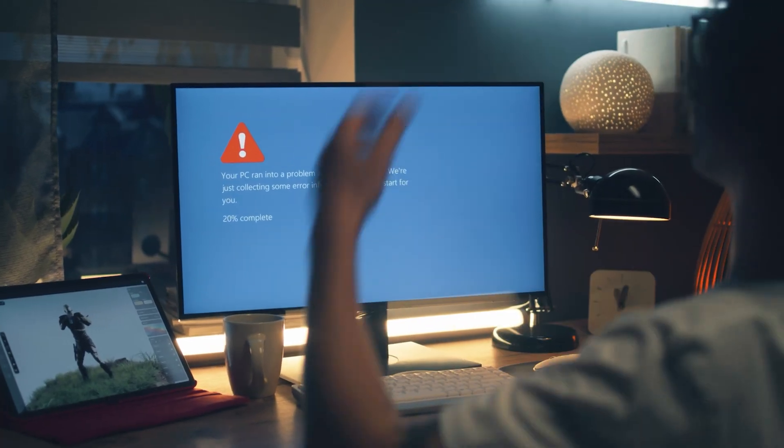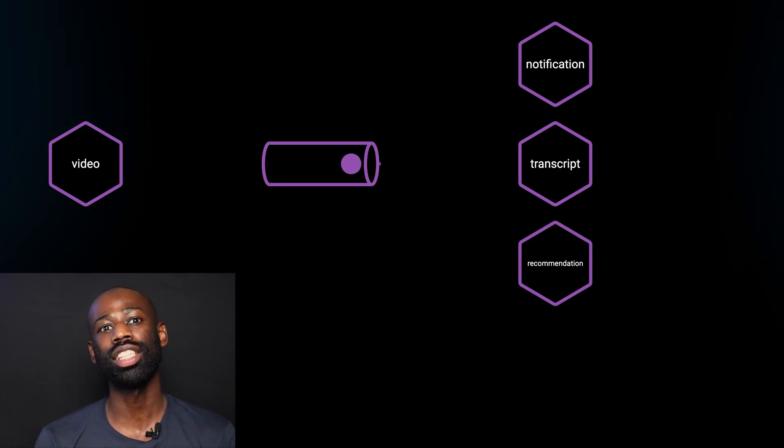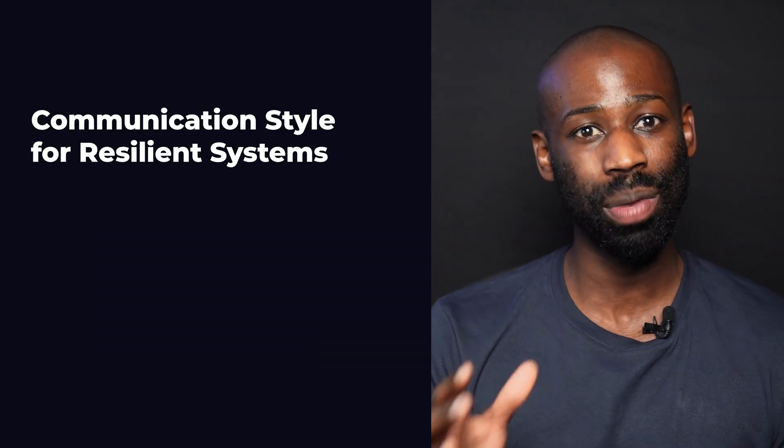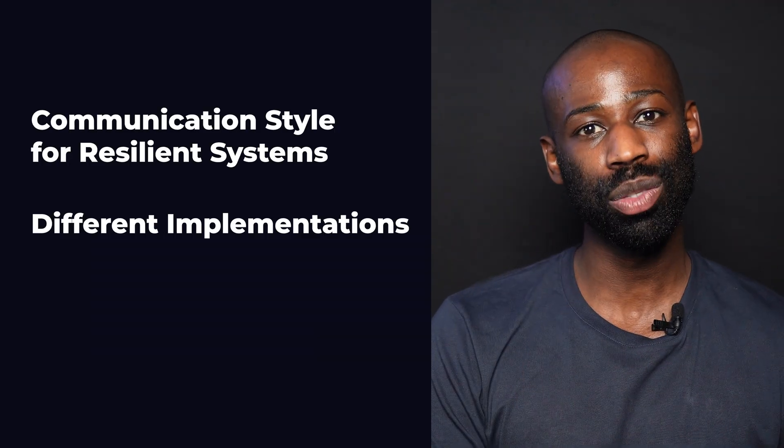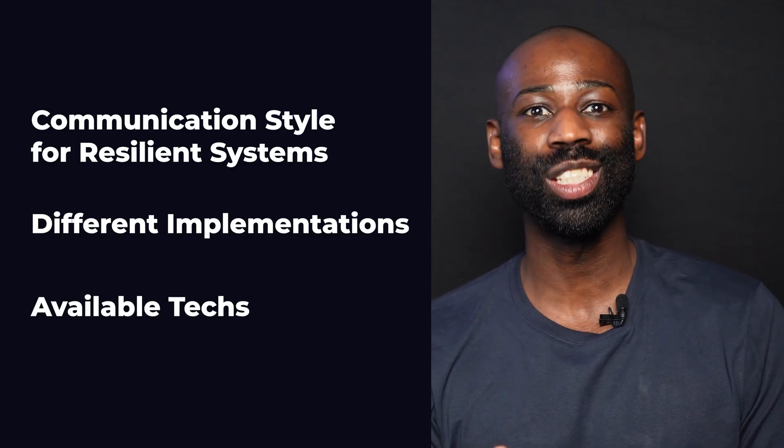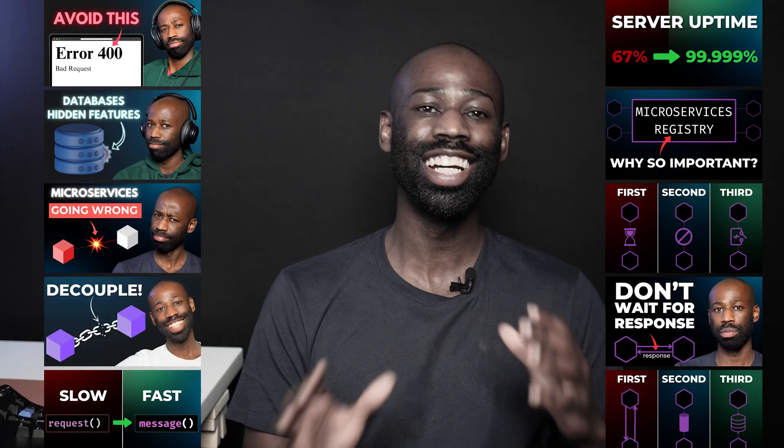If you want your system to continue working even if some parts are down, and if you want your system to handle a huge amount of requests, there is only one style of communication that makes that possible. I have extensively worked with distributed systems, and in this video I'm going to show you what style of communication is best for resilient systems, different ways to implement that style, and some technologies available for it. This video is part of a 10-episode series on microservices communication, but all the concepts discussed here are applicable to any distributed system.